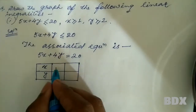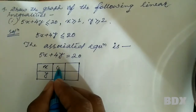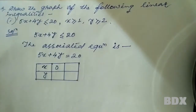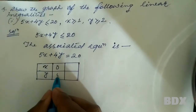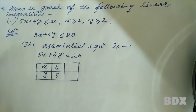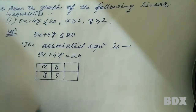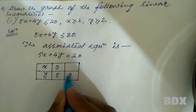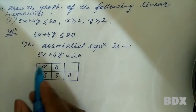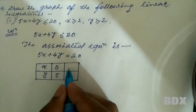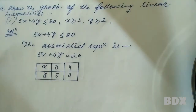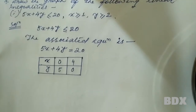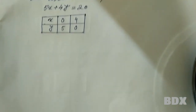Setting up an x-y table: suppose the value of x is 0, then the value of y will be 5. Suppose the value of y is 0, then the value of x will be 4.